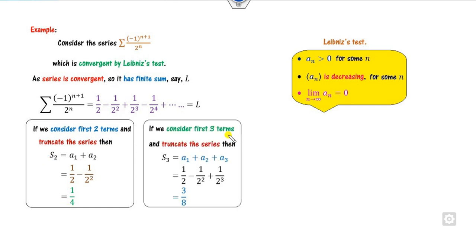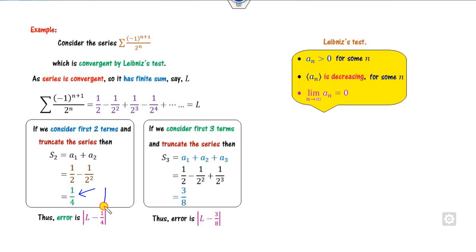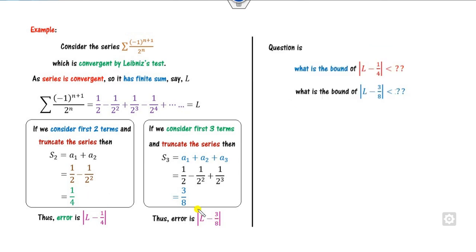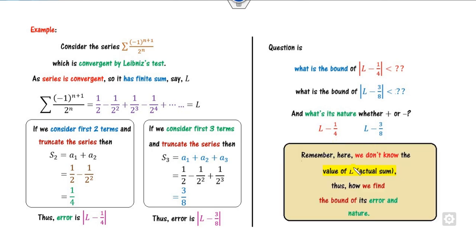If you consider a three-term series then your sum will be here. This is my actual sum L, and this is my truncated or approximate sum. So the error will be L minus 1/4, and for the three-term case it is L minus 3/4. The key point to remember here is that L is unknown. So once L is unknown, how do you find the bound of this difference, because L can be 1, 900, or 1 lakh? That is the challenge of finding the error and its nature for this infinite series.